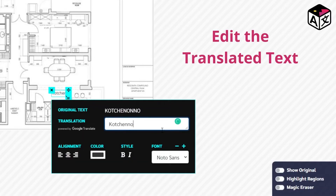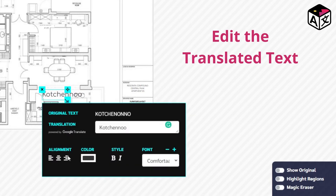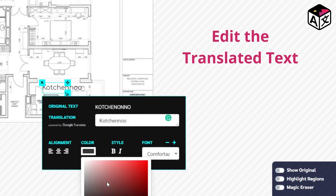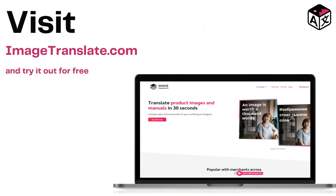With Image Translate, one can translate CAD drawings into English or any other language from a choice of 40 plus languages. You can simply drag and select text to translate from the drawing, and you can also edit the text, choose from different fonts, make the text italic or bold, or change the color of the text. Image Translate's redrawing algorithm makes sure that the original look of the drawing is intact and does not mess with the original drawing. Image Translate itself is a tool that combines the power of CAD tools and the accuracy of a human translator. Visit ImageTranslate.com.